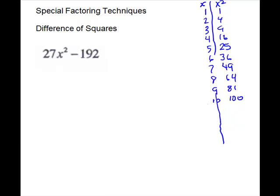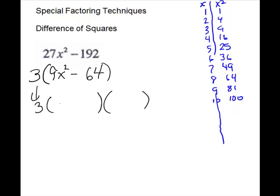For this problem, you're also going to go with a GCF first. Try the 27, but it doesn't go into 192, so you have to go lower — 9 doesn't work; it's actually going to be a 3. So that leaves us 9x² minus 64. And this is a difference of squares — our 3 is going to come down. For 9, we'll do 3x and 3x, always different signs. 64: 8 times 8.